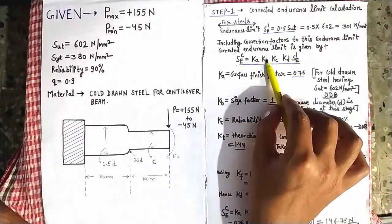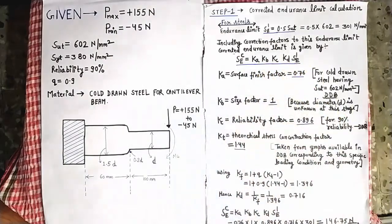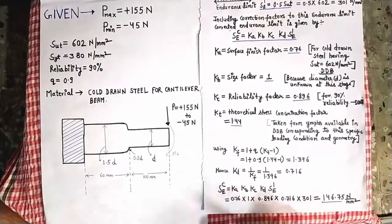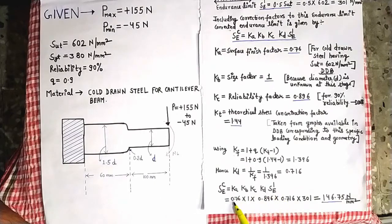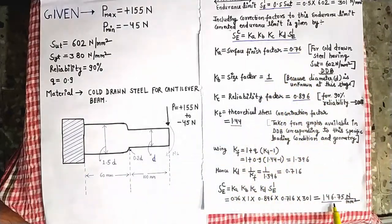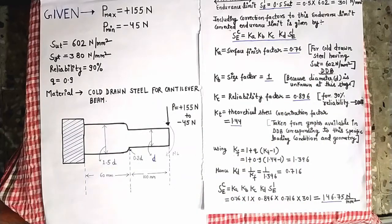We have now found all the correction factors. The corrected endurance limit SEC = KA × KB × KC × KD × S'E. Multiplying all these values together, the value of the corrected endurance limit SEC is calculated — it comes out to be 146 Newton per mm².